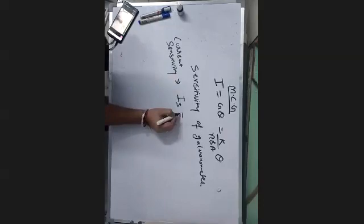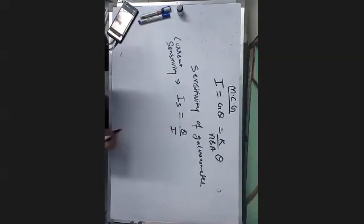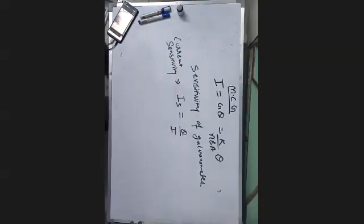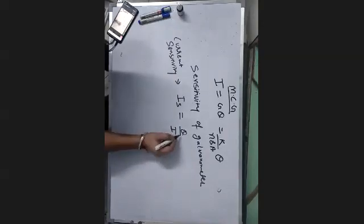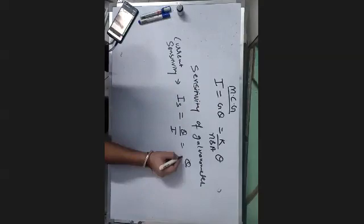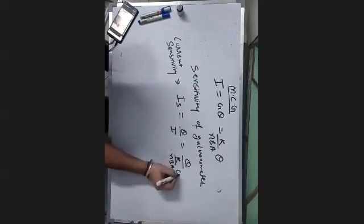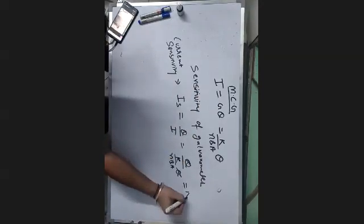Current sensitivity (Is) is equal to theta by i. The deflection theta is produced when the coil is rotated by current i. Substituting the galvanometer relation, which is k upon NBA, theta cancels out. So the formula becomes NBA by k.